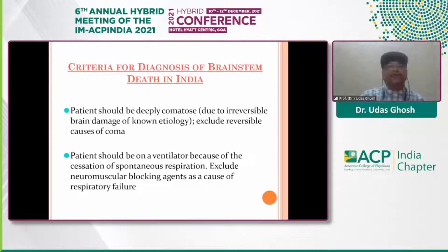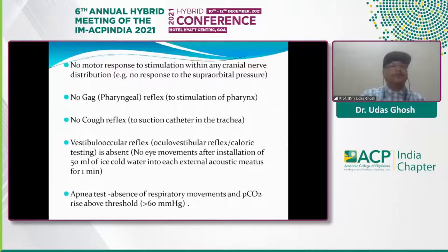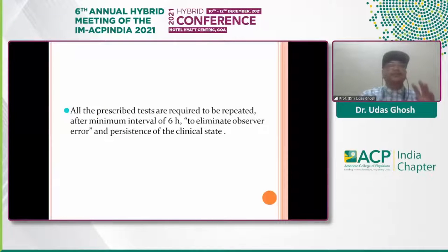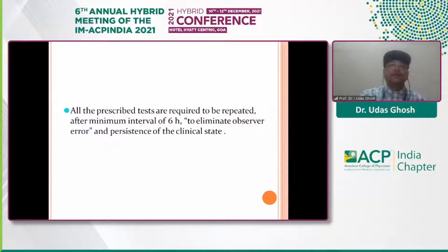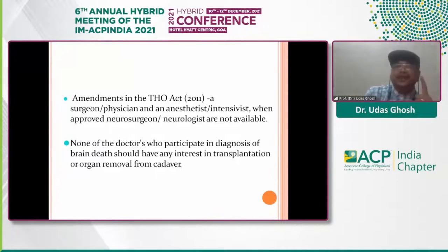For the criteria for diagnosis of brainstem death: all brainstem reflexes should be absent — no gag reflex, no corneal reflex, no vestibulo-ocular reflex. All these tests are required to be repeated after a minimum interval of six hours, to eliminate observer error and confirm persistence of the clinical state. If you do not have a neurosurgeon or neurophysician, you can take one surgeon or physician and one anesthetist or intensivist to make a team of four. None of the doctors participating in brain death diagnosis should have an interest in organ transplantation.